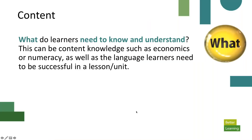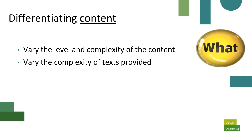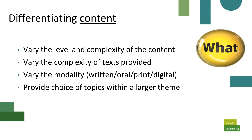By content, we mean what learners need to know and understand — this could be content knowledge such as economics or numeracy, or the language needed to complete a task, like language functions, forms, or new vocabulary. How can we differentiate content? We can vary the level and complexity of the content itself — novice and expert content provided to students. We can vary the complexity of texts in terms of lexile, reading level, load, and length. We can vary the modalities presented — some students doing readings, listening, speaking, some accessing things in print, some digitally. And we can provide choice of topics within a larger theme.